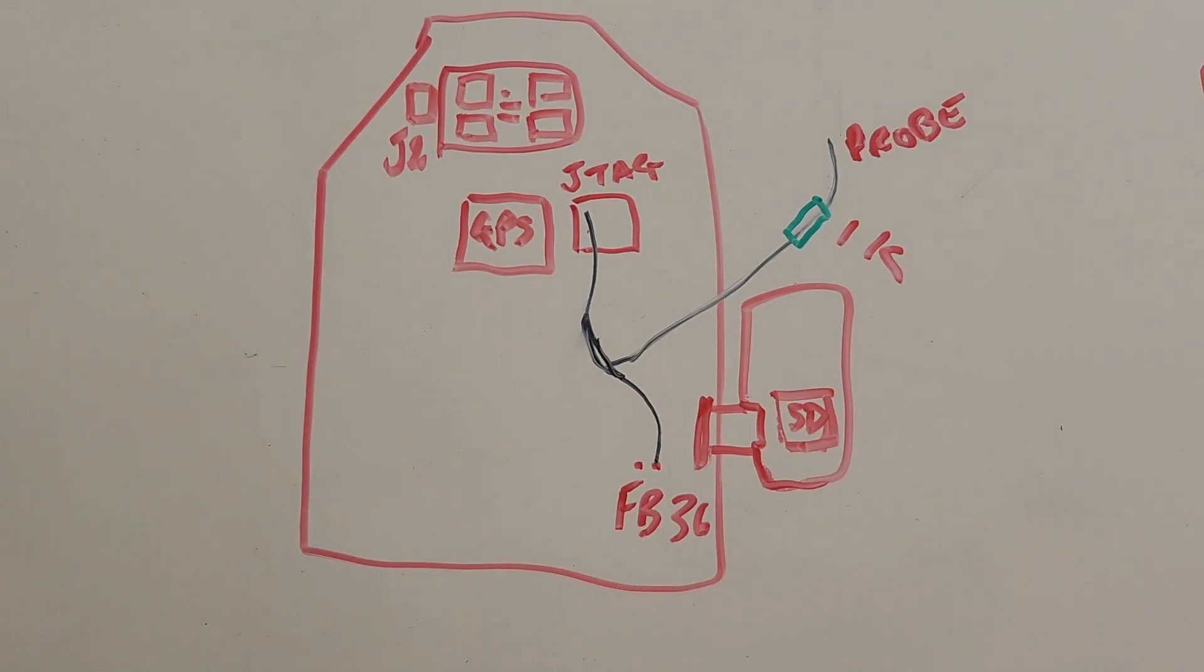But the only thing you need to change is, rather than dropping that resistor on the power line before it branches, just put it on the probe side.